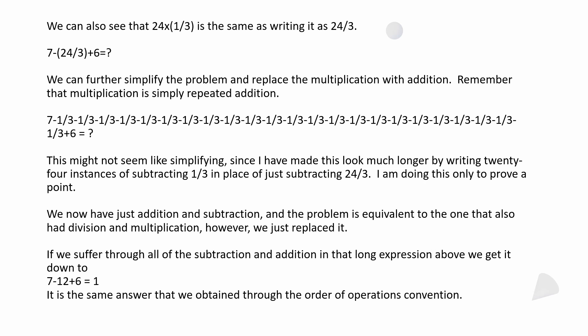I've simplified it here to 7 minus 24 thirds plus 6. Now you can further simplify that down and replace your multiplication with addition. Remember that multiplication is simply repeated addition. Now this looks kind of bad, but you could break down 24 thirds into 24 one-thirds and subtracting them. It might not seem like simplifying since I just made it look a lot longer and had to write out a whole lot more.